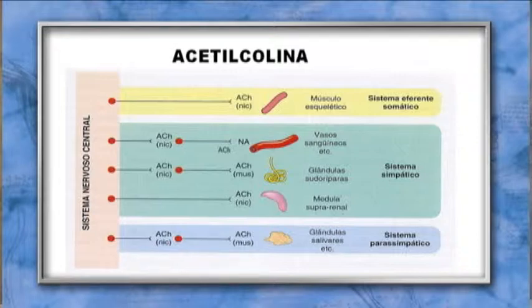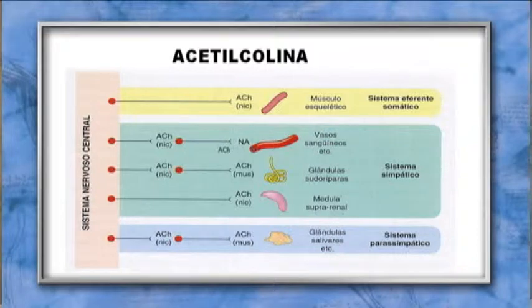O sistema simpático tem como neurotransmissor a noradrenalina. No entanto, nas glândulas sudoríparas, na medula suprarrenal, em alguns vasos sanguíneos e nos músculos piloeretores, o neurotransmissor é a acetilcolina. Portanto, a acetilcolina está presente em todos os receptores nicotínicos pré-ganglionares, nos pós-ganglionares do sistema simpático e no sistema eferente somático.